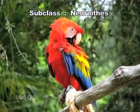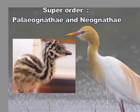Subclass Neornithes: this class of birds is classified under modern birds of the post-Jurassic period. Their wings are well developed for flight, with few exceptions. Superorder: Paleognathae and Neognathae. Paleognathae — paleos meaning old and gnathos meaning jaw — and Neognathae meaning new jaw birds.